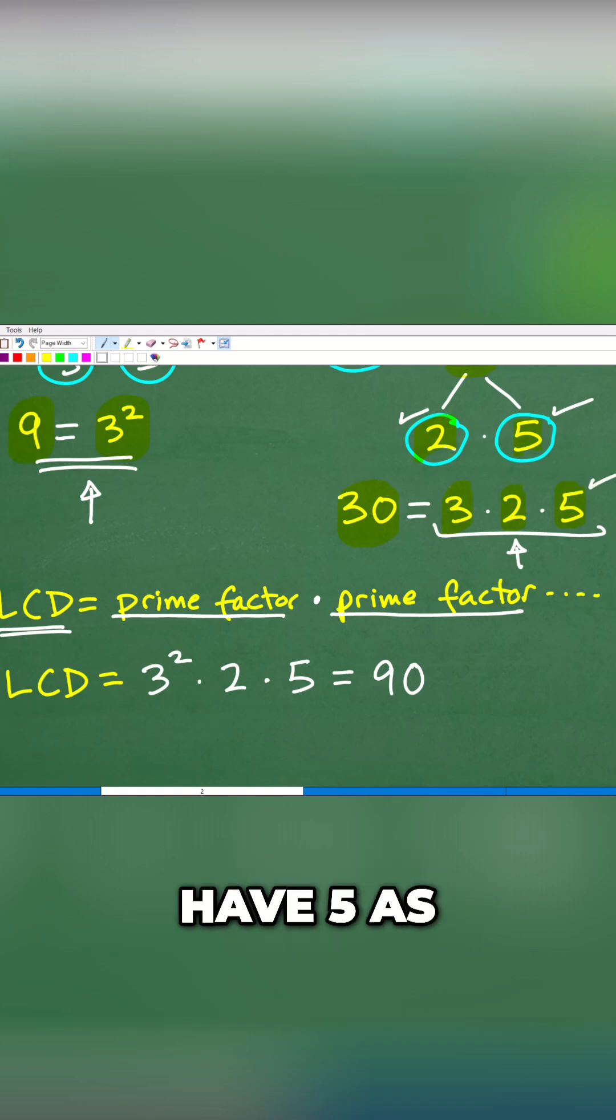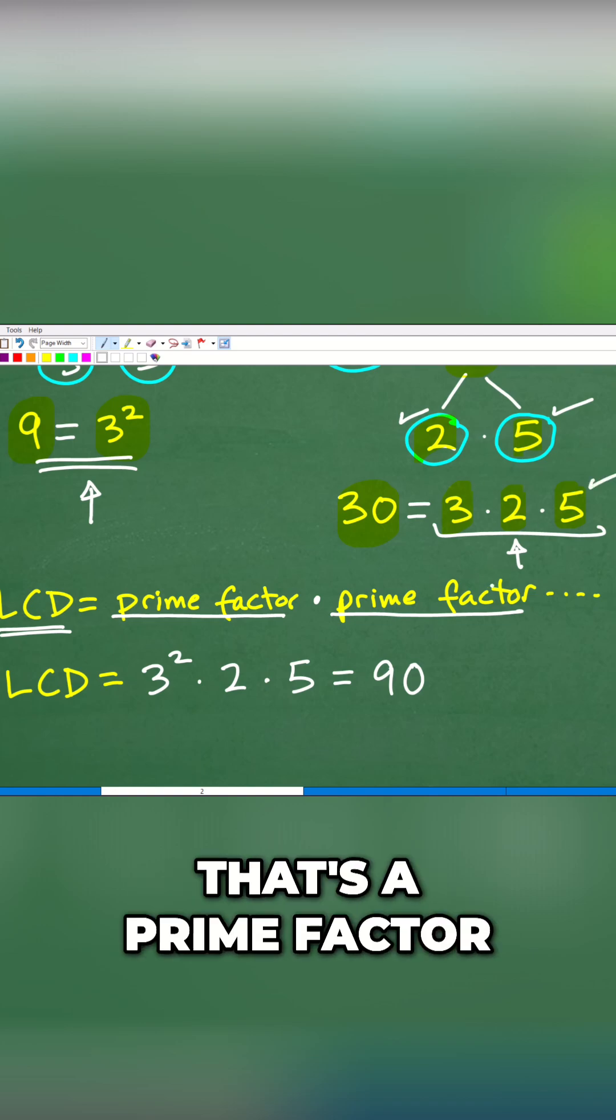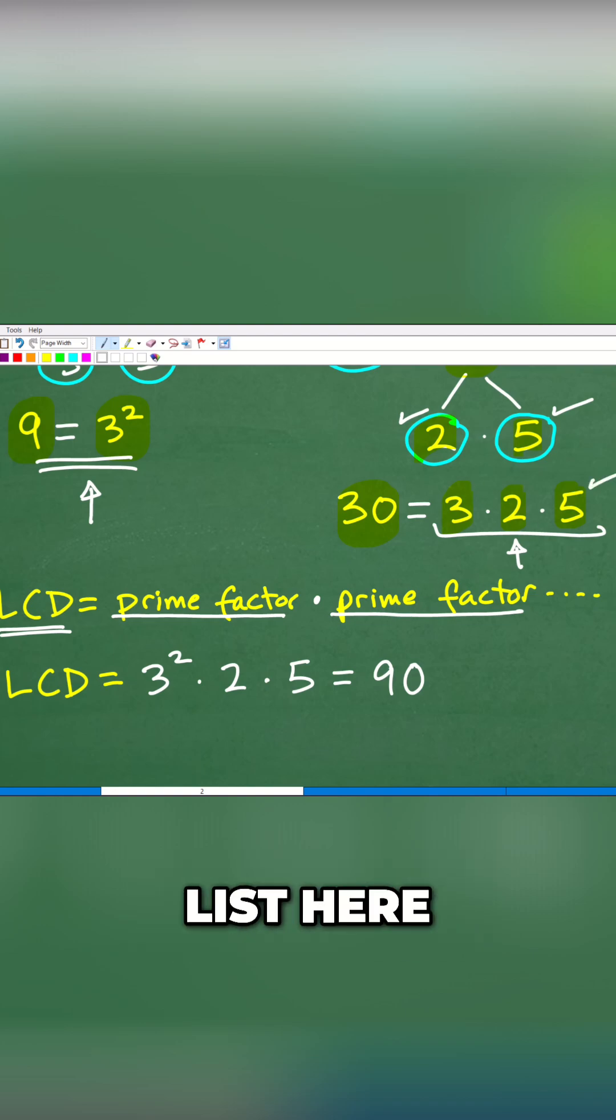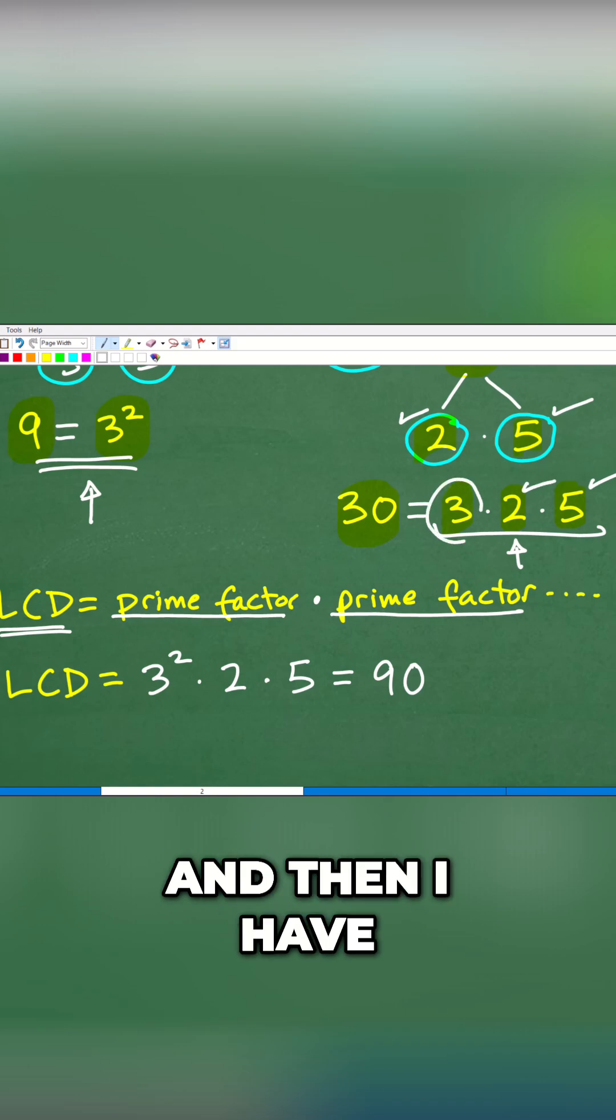So for example, I'm going to have to have 5. That's a prime factor, so I need to have that in my list here. I need to have a 2. And then I have a 3 here, and I have a 3 squared here.